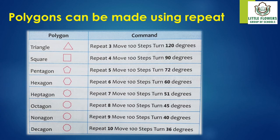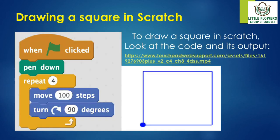To draw a square in Scratch, the code is: when flag clicked, pen down, repeat 4 — move 100 steps, then turn 90 degrees.